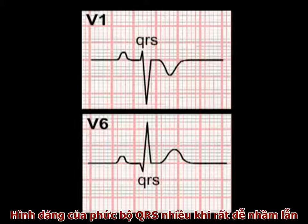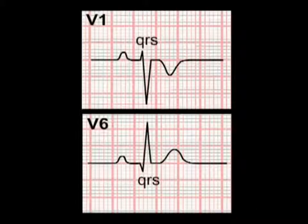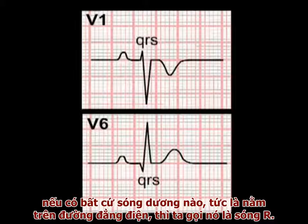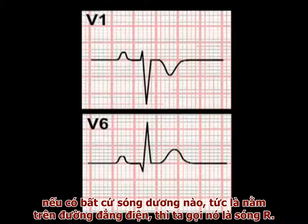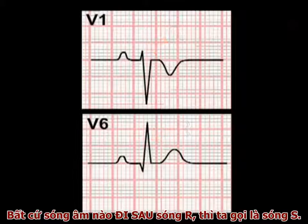The nomenclature of the QRS complex can cause some confusion, but is in fact quite straightforward. Within the QRS complex, any positive deflection — that is, a deflection above the isoelectric line — is termed an R-wave. Any negative deflection which follows an R-wave is termed an S-wave.